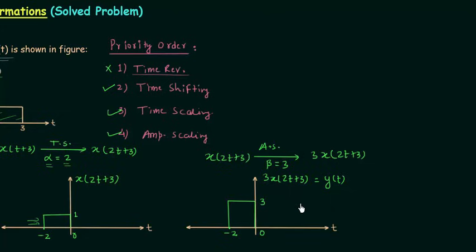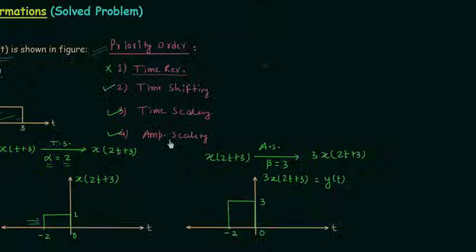In the last operation, amplitude scaling with beta equal to 3 — which is greater than 1 — we have amplification. Comparing the two signals we can clearly see there is an increment in the amplitude. So this is all for this lecture; you can easily solve problems based on multiple transformations if you follow the priority order correctly. In the case of discrete time signals we have to follow the same steps — try solving a few examples and if you have any problem you may ask in the comment section.